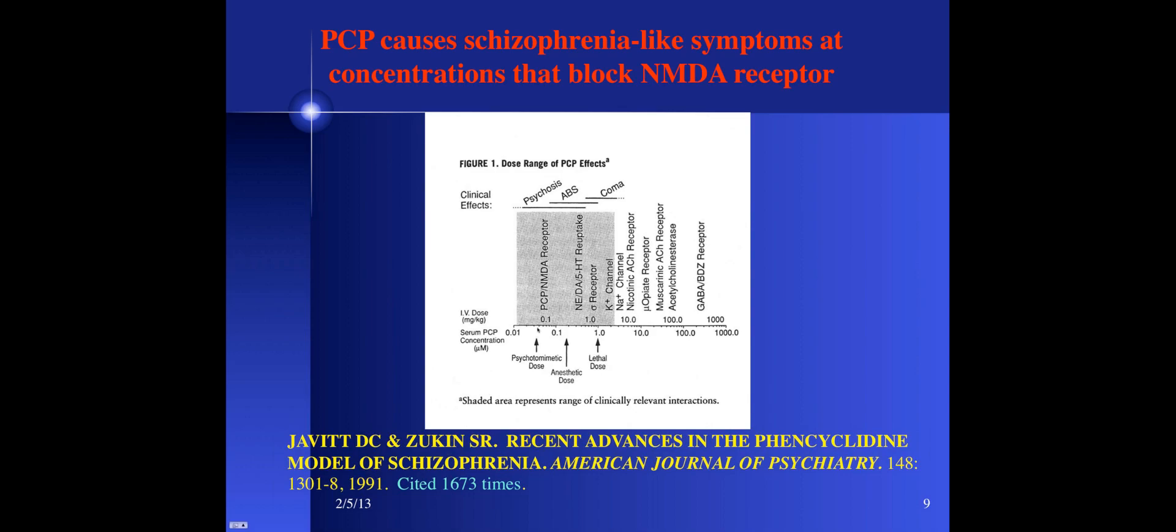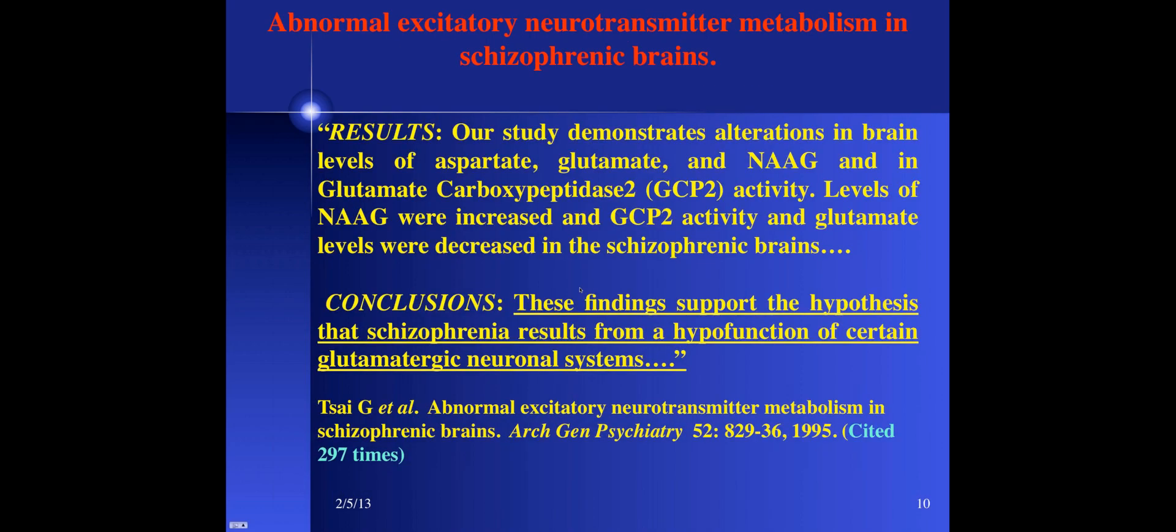The NMDA receptor is a coincidence detector but plays a central role in neuronal plasticity throughout development and life. It is normally silent unless the neuron is depolarized, which relieves a magnesium block in the channel. Glutamate is the transmitter, but it cannot open the channel unless a co-transmitter, either D-serine or glycine, binds to a second recognition site. With that, the channel opens and there's influx of calcium which drives gene expression, especially genes involved in synaptic plasticity. The dissociative anesthetics such as ketamine serve as non-competitive channel blockers of the NMDA receptor.